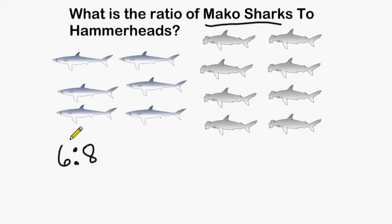So the ratio of mako sharks to hammerhead sharks is 6 to 8. Next we have to check to see if this ratio can be expressed in a simpler form. To do this, see if there is a common factor that can be divided into 6 and 8.